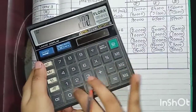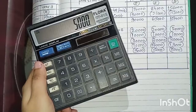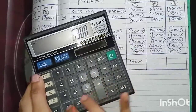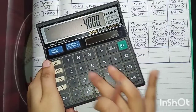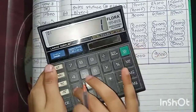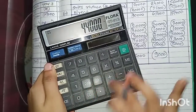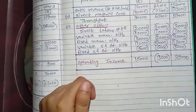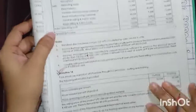Operating income under throughput costing: Year 1: ₹90,000 − ₹20,000 − ₹10,000 − ₹30,000 − ₹10,000 − ₹5,000 = ₹15,000. Year 2: ₹63,000 − ₹20,000 − ₹10,000 − ₹30,000 − ₹7,000 − ₹5,000 = −₹9,000. Year 3: ₹1,17,000 − ₹20,000 − ₹10,000 − ₹30,000 − ₹13,000 − ₹5,000 = +₹39,000. Throughput costing income statement is complete.